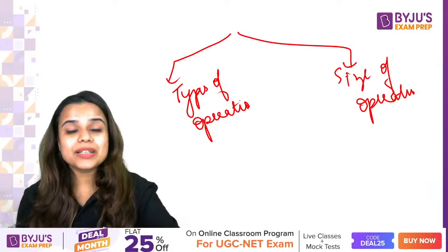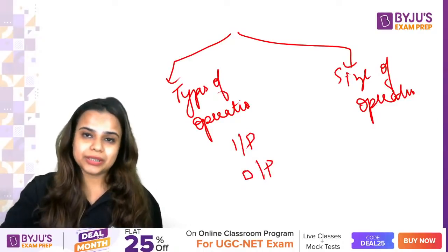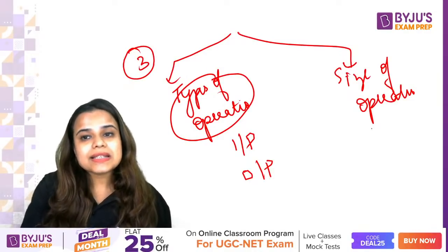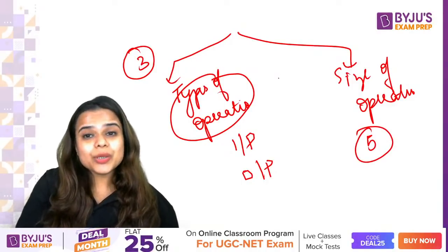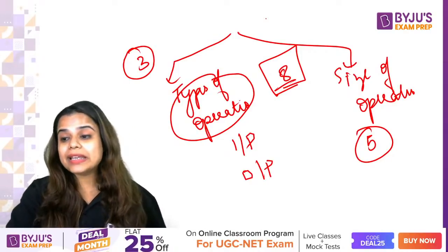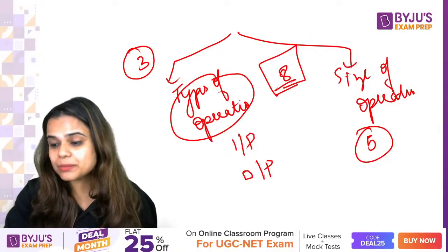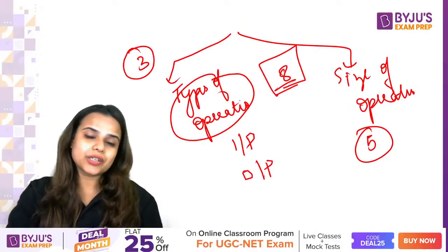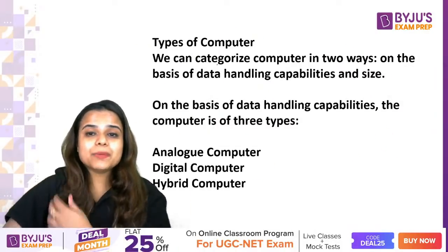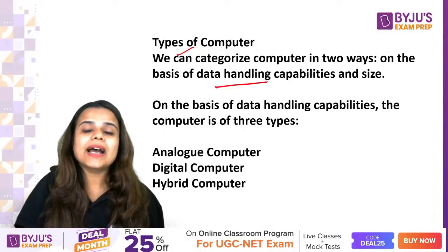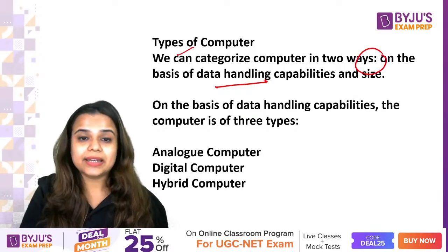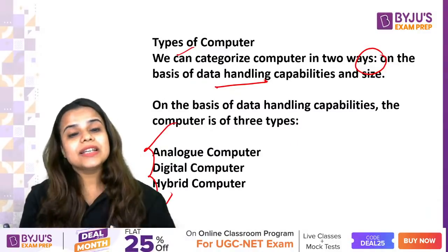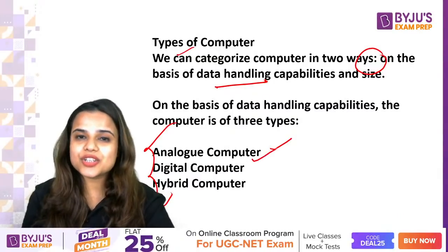In the first category based on data handling and operation, there are three types of computers. In the second category based on size, there are around five types. So in total we have eight types of computers. Your mobile and handheld device are also computers. We can categorize by basis of data handling - what kind of data is it handling - and by what size it is. Based on data handling, there are three types: analog, digital, and hybrid.